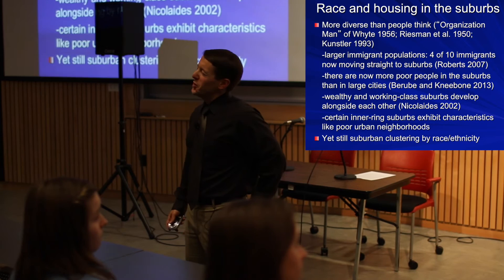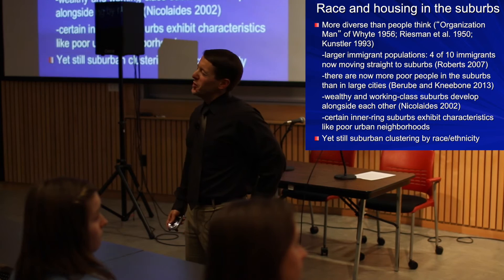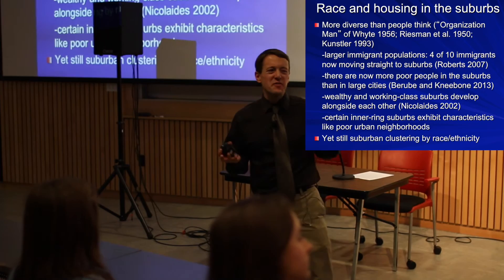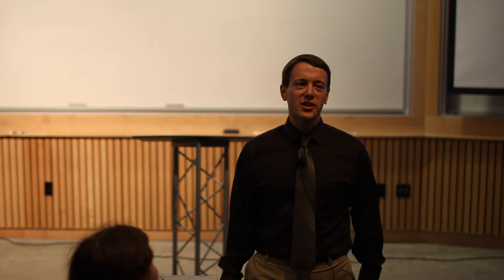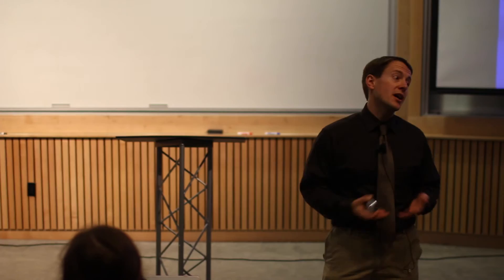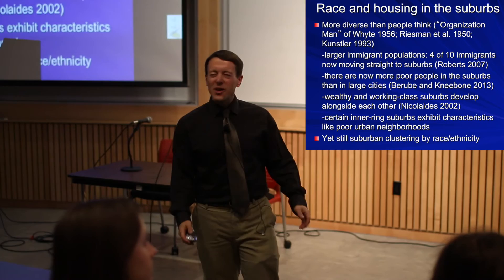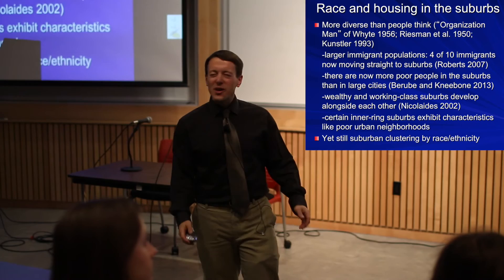Suburbs are actually getting more diverse than people think. Sociologists have noted that the 1950s image of white suburbia with a nuclear family in a single-family home has changed quite a bit. About four out of every ten new immigrants in the United States now moves directly to the suburbs. Our old model suggested they'd go live in an ethnic enclave in a big city — Chinatown, Little Italy — and then their kids would move to the suburbs. That's no longer the case. There are actually now more people in poverty in suburbs than in big cities, in terms of absolute numbers.